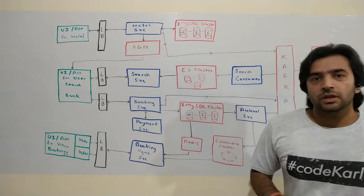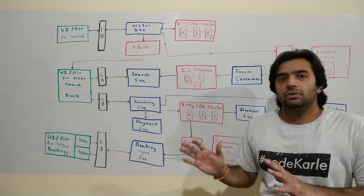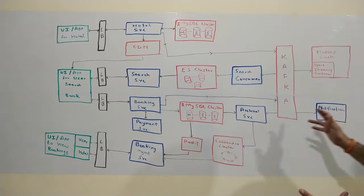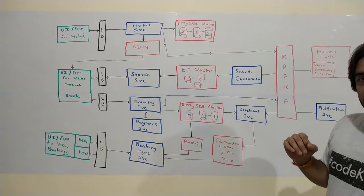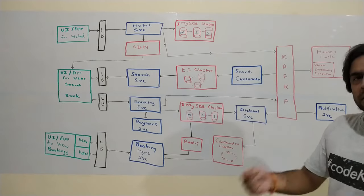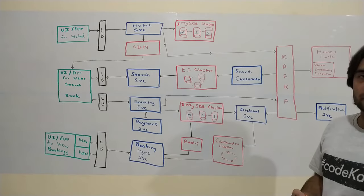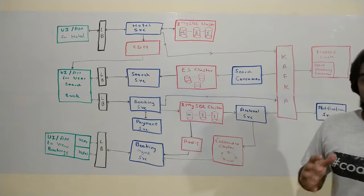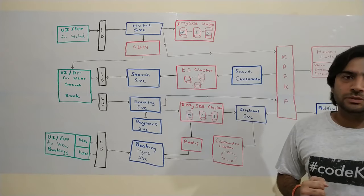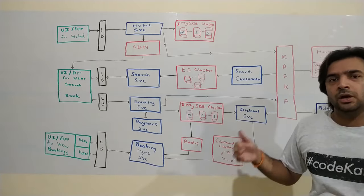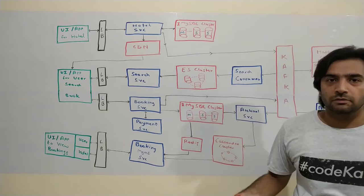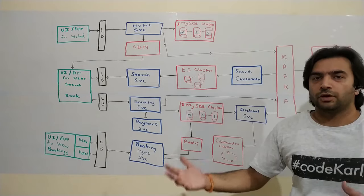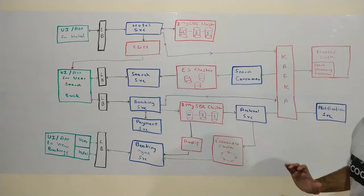Once booking is done, we need to notify people — that's handled by the notification service. It consumes events from Kafka and notifies relevant parties: on each booking the hotel is notified, on cancellation the consumer is notified, and on each booking the consumer receives an invoice. A booking management service provides a read-only view of bookings — querying the MySQL cluster for active bookings and the Cassandra cluster for completed ones, with a Redis cache on top of MySQL to reduce load.